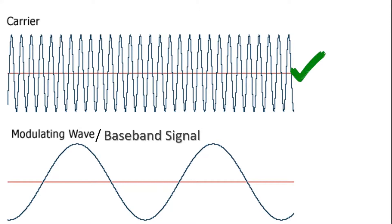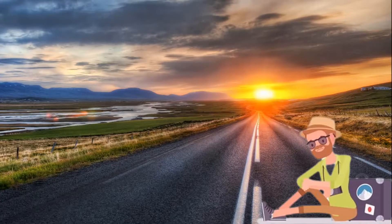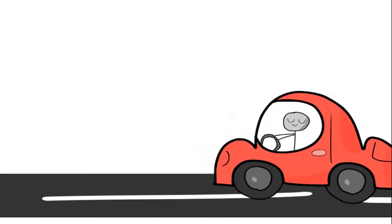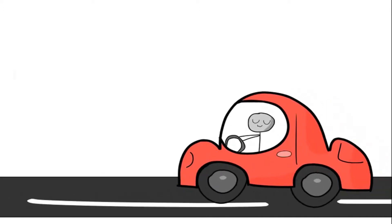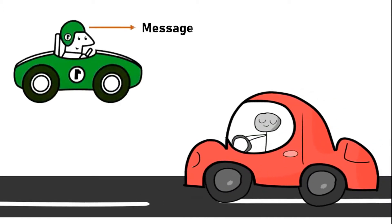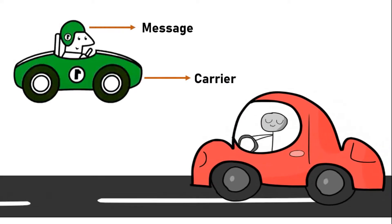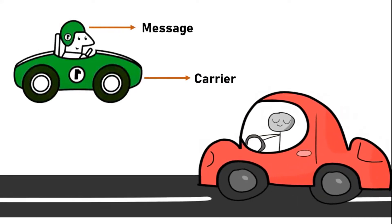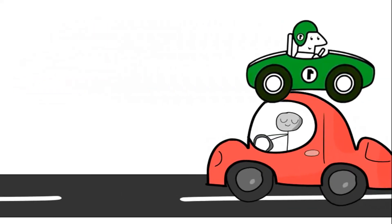Now with an example, try to understand this message and carrier signals. Suppose you need to travel a long distance and it is not possible to reach there by walking, so you just rent a car and reach your destination without any loss. In this example, you may be the message and the car is the carrier signal, which just carries the message to the destination.